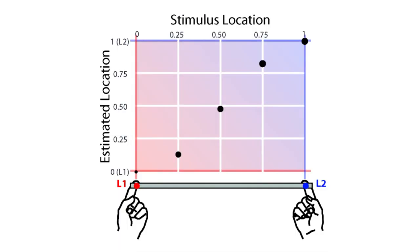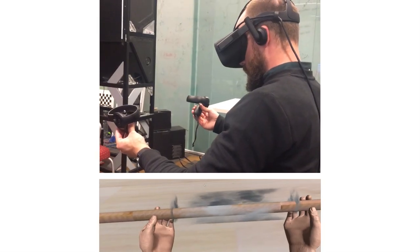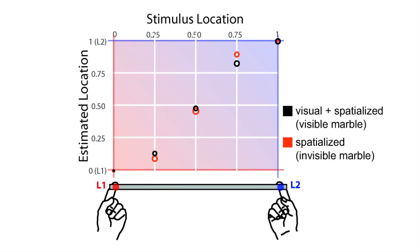The touches are felt to be located in the empty space between the hands. When we produce the same stimulation without the marble, the apparent out-of-the-body spatial location of the touch sensations will persist.